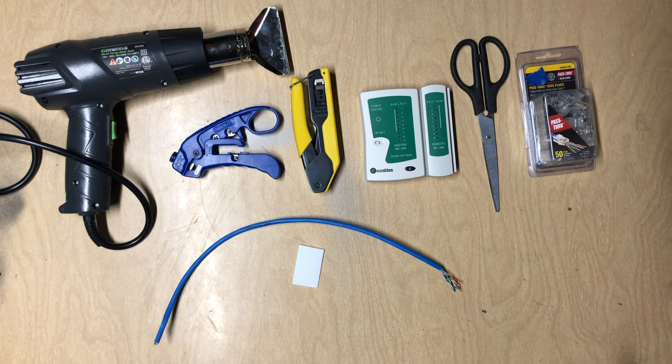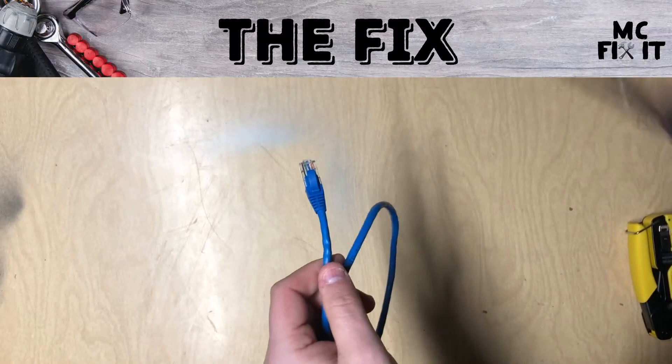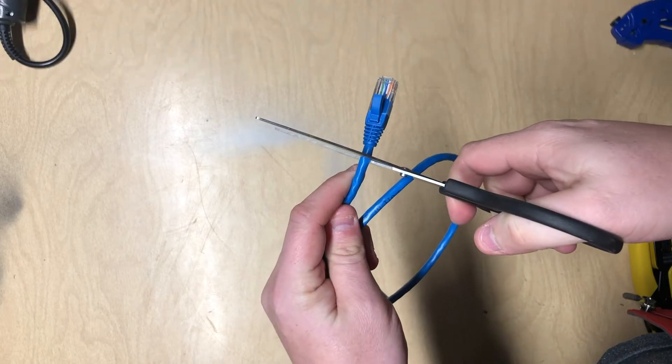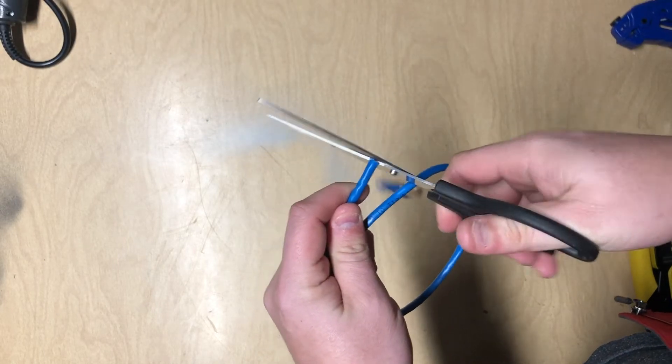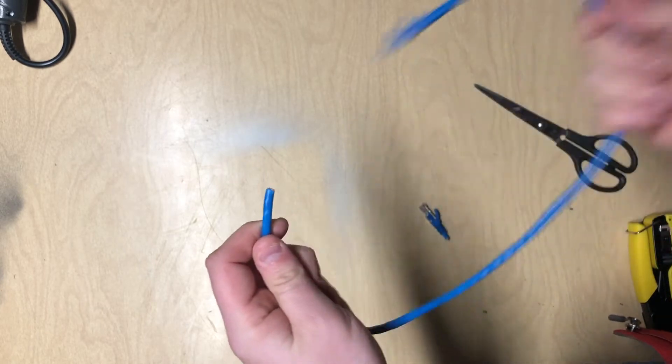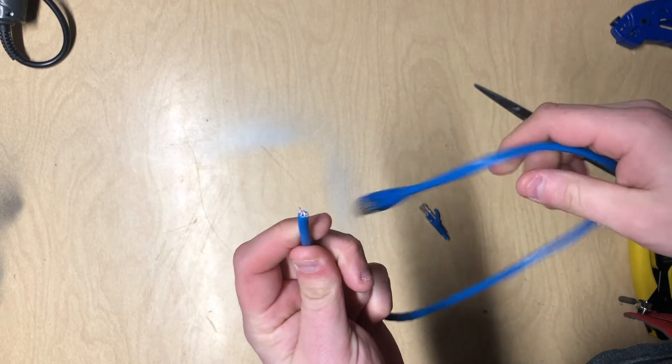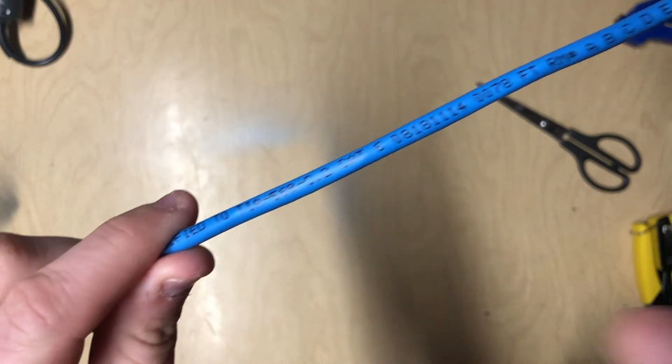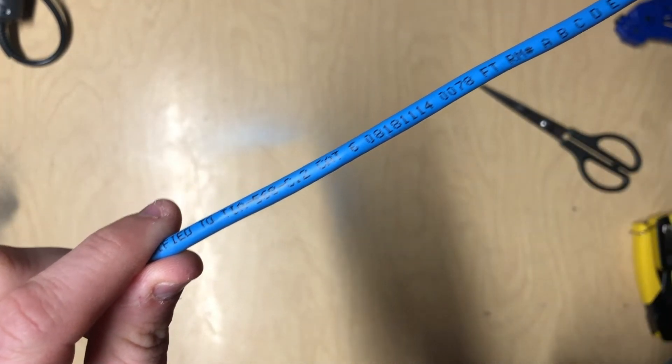The first thing you're going to do is get a pair of scissors and just cut the end off pretty close to where it was. That will get you a good start right there. We're going to show you how to strip that back in one second. Once that end is cut, you want to verify to make sure it is Cat6.